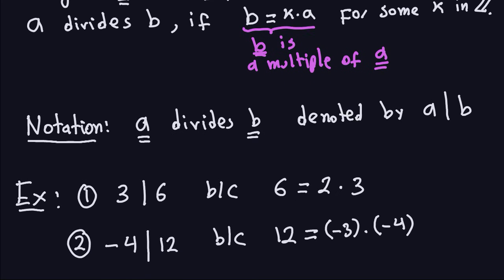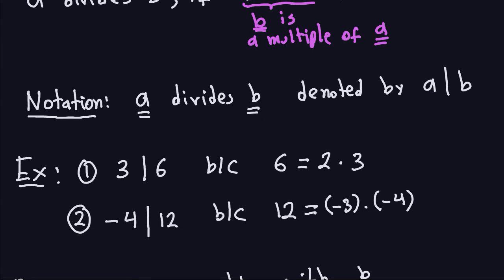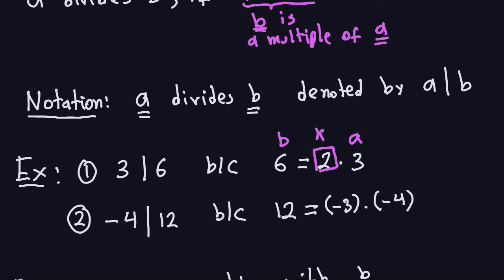Some examples of divisibility: when I write 3|6, I mean that 3 divides 6, and that is true because 6 is an integer multiple of 3. I can express 6 as 2 times 3, so in this case the value of K is 2. Similarly, it is also true that negative 4 divides 12, because I can express 12 as negative 3 times negative 4. In this case, the negative 3 is my K.